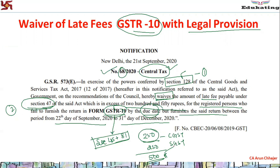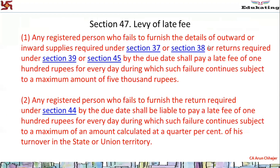This is a very good opportunity, and we were all waiting for this for 3 years — we felt some notification regarding GSTR 10 should come. Now let us talk about Section 47. Section 47 says: any registered person who fails to furnish the details of outward supply (Section 37), details of inward supply (Section 38), the regular return under Section 39 (GSTR 3/3B), or Section 45 — which is our current discussion.